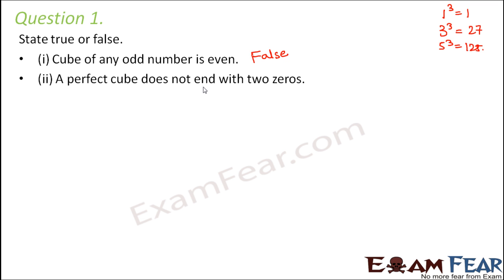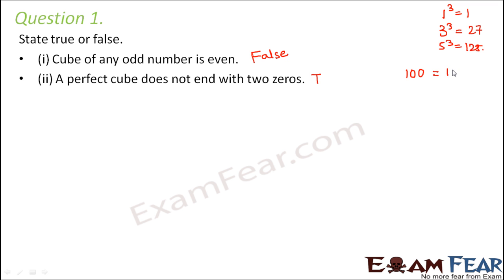A perfect cube does not end with two zeros — that's true. Think of any example of a perfect cube ending with two zeros, for example 100. When you have two zeros, it can never be a product of three same numbers. 100 equals 10 times 10, so it's a perfect square but cannot be a perfect cube.